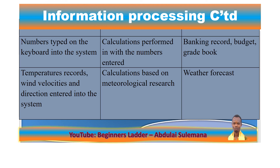Let's add another example — weather forecast. Before a meteorologist can come out to forecast whether it will rain or not, he has to do some background work. That has to do with taking temperature records, wind directions and other steps, and entering them into the system. Per the comparisons made, he will be able to predict what is going to happen tomorrow.